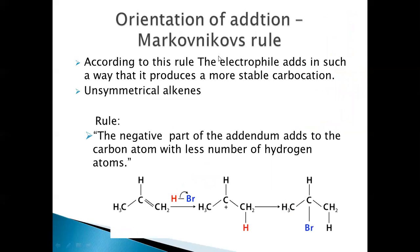Now let's see the orientation of addition. When an unsymmetrical alkene is taken, the addition takes place in such a way that a more stable carbocation is produced. More than one product is formed but in unequal amounts. Which product is formed in major amounts and which in minor amounts can be predicted based on Markovnikov's rule.